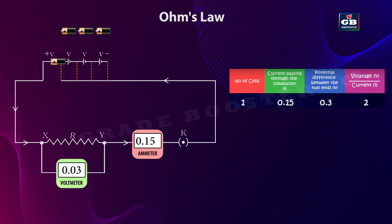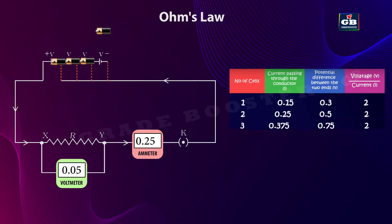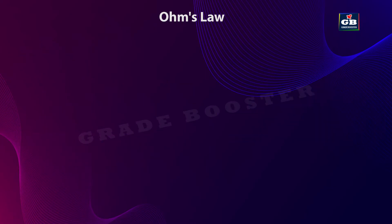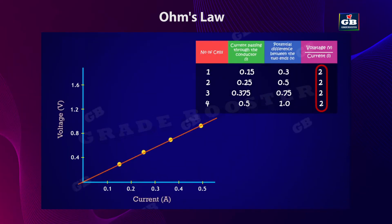Now, let us add one more cell to the battery and note down the readings. Take the readings with three cells and next with four cells. Now, let us observe the table and the values recorded. Plot these values on a graph having current flow on the x-axis and potential difference or voltage on the y-axis.